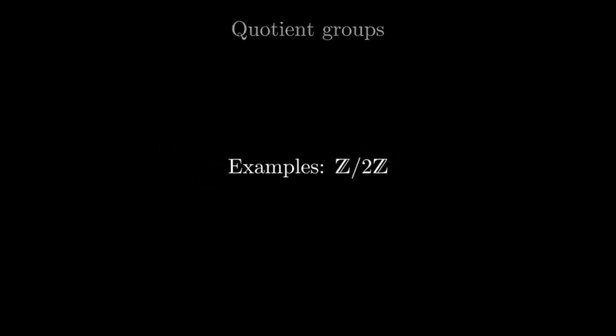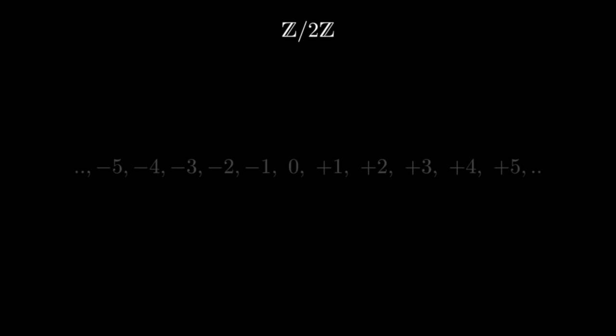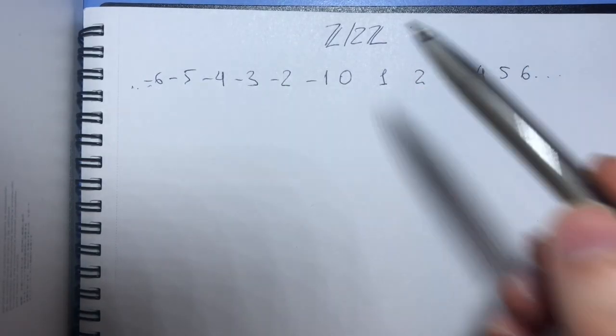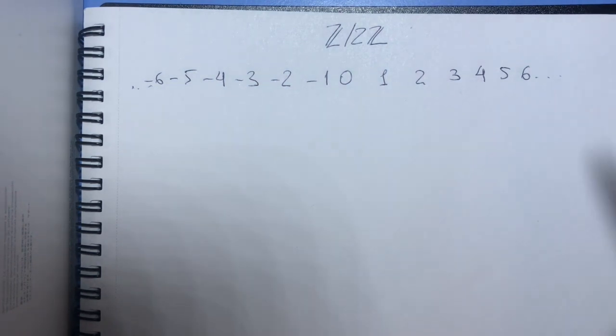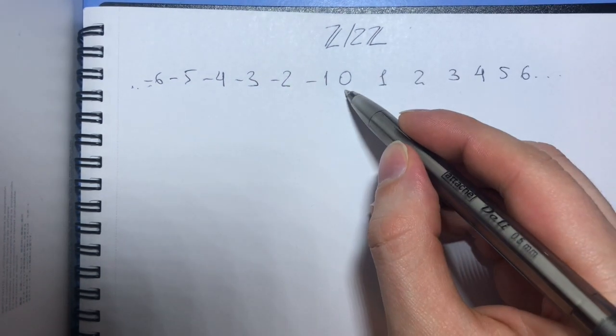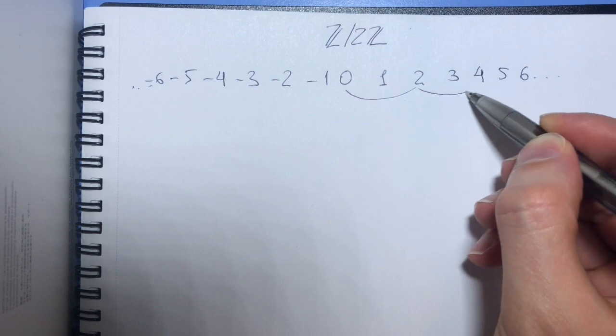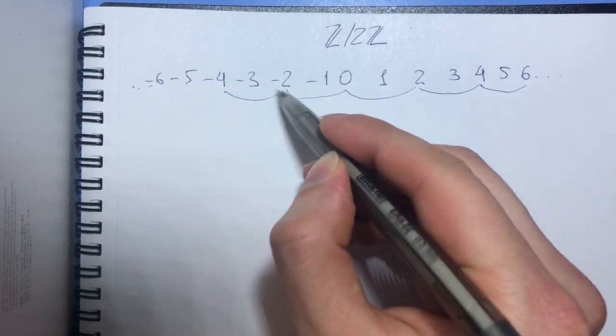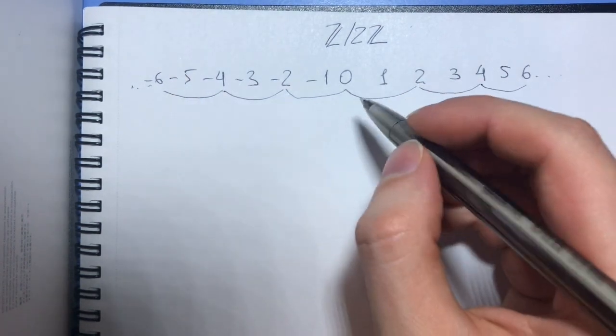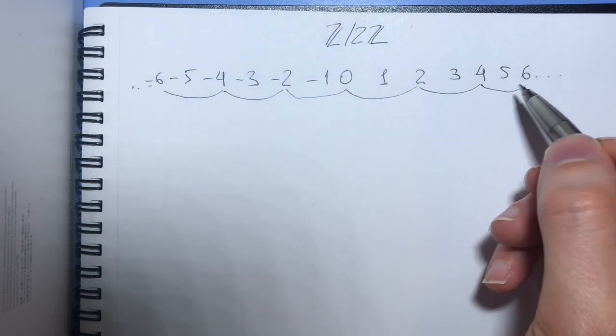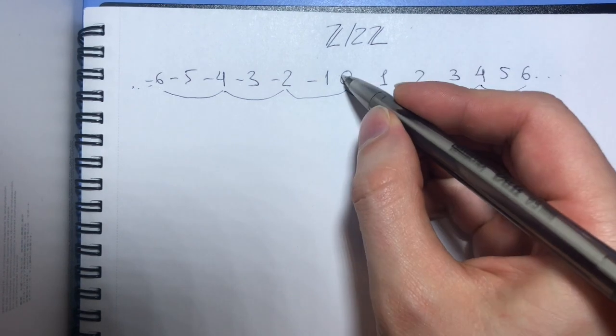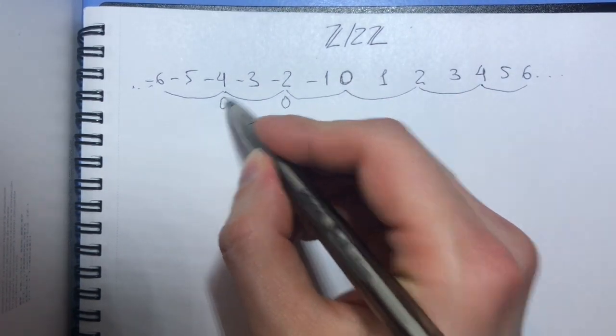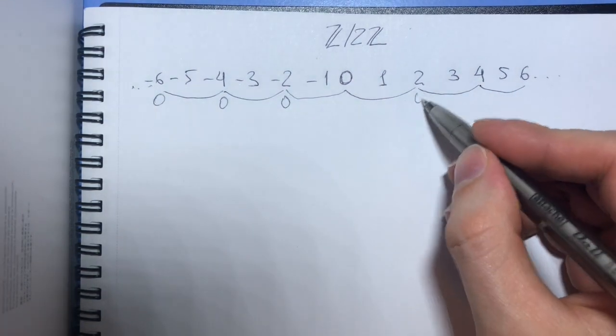A familiar example would be that of Z mod 2Z. So here's what happens in this group. Here we have integers and we basically glue together or identify all even numbers. So we want to regard them as the same and since they are the same, they are also the same with zero. So in fact all of these numbers become zeros to us.